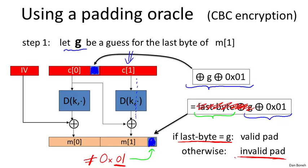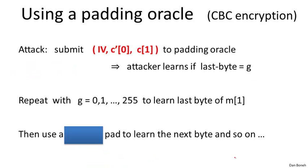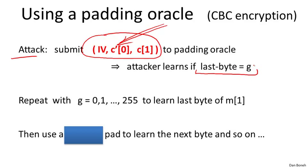So if our guess G for the last byte of M1 is correct, we learn that G was correct. If our guess is incorrect, we learn G is wrong. The attacker creates his modified ciphertext — only modifying the second block — sends it to the padding oracle, and based on the result learns whether the last byte equals G. We repeat this for G from 0 to 255, requiring at most 256 chosen ciphertext queries — on average 128. This reveals the last byte of M1.